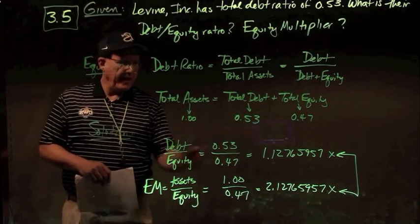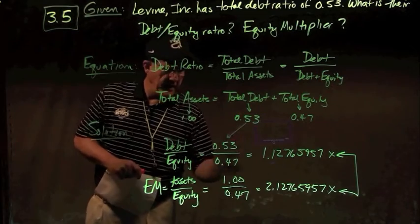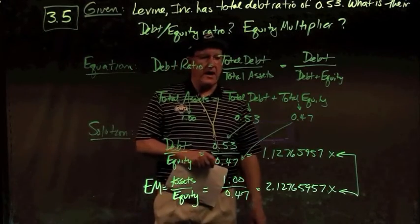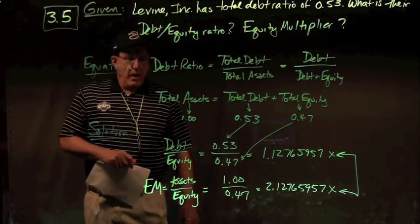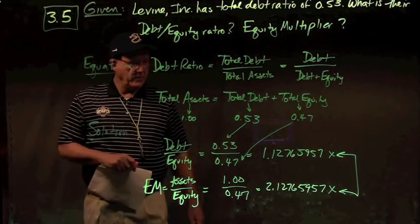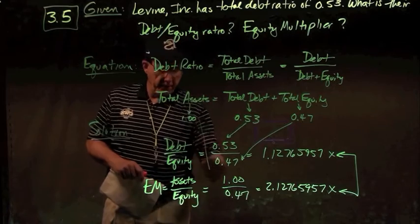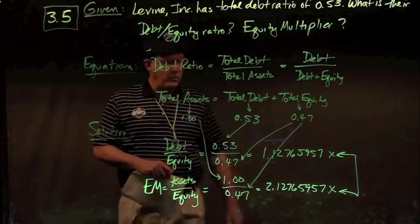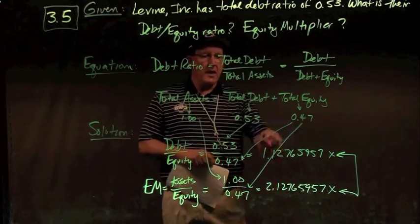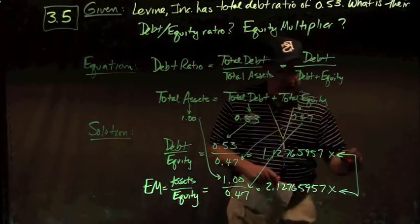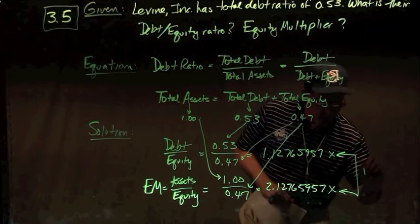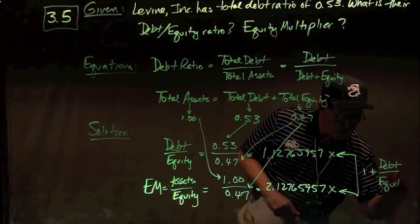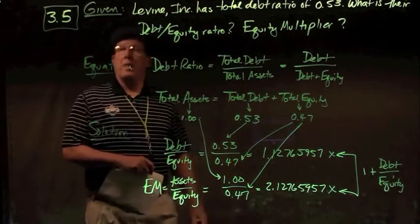Using these numbers: debt divided by equity is 0.53 divided by 0.47, giving a debt-to-equity ratio of 1.1277 times. For the equity multiplier, assets over equity: 1 divided by 0.47 gives 2.1277 times. Comparing these two numbers, the equity multiplier is simply 1 plus debt-to-equity. There you have the answer to problem number 5.